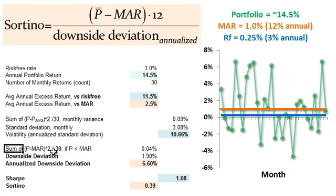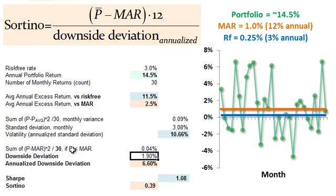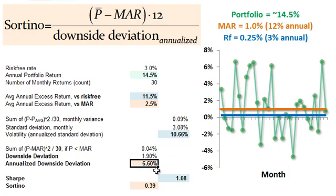Dividing by the total 30 gives us the monthly downside variance. Taking the square root gives the monthly downside deviation, which is the analog to monthly standard deviation but focused only on returns below the hurdle. We then annualize by multiplying by the square root of 12, giving an annualized downside deviation of 6.6%. So the Sortino is 2.5% divided by 6.6%, which equals 0.39.